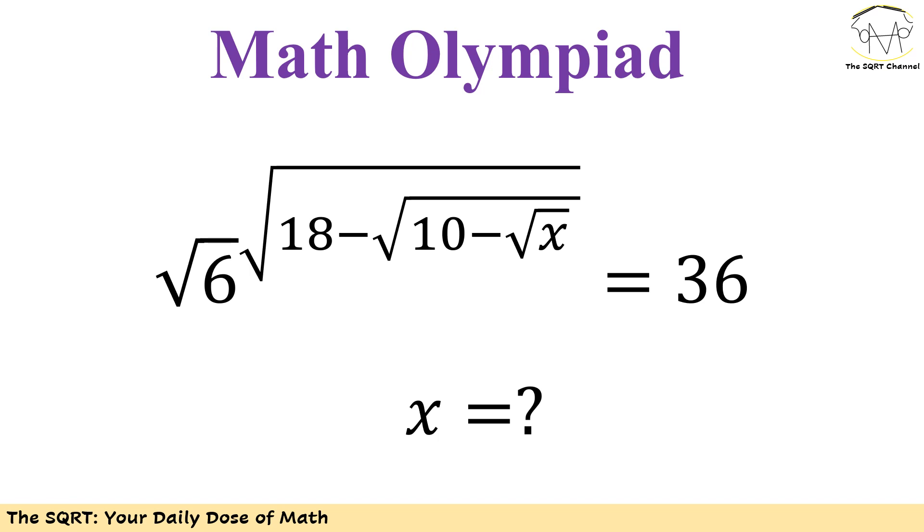In this equation we have radical 6 to the power of square root of 18 minus radical 10 minus radical x. The whole thing is 36 and we need to find x here.